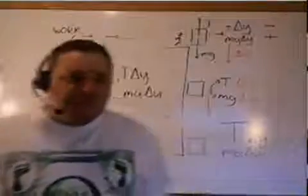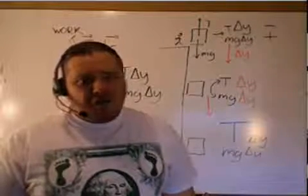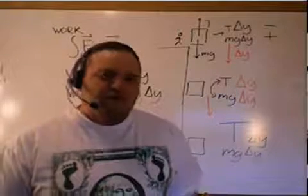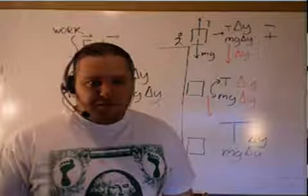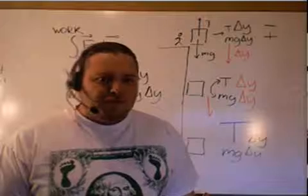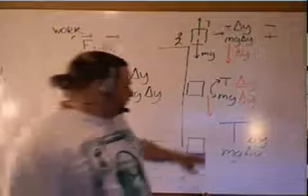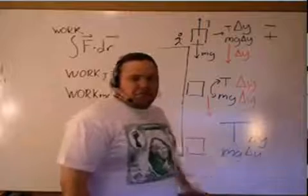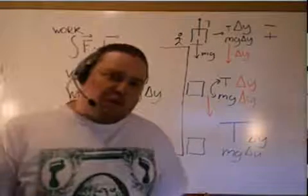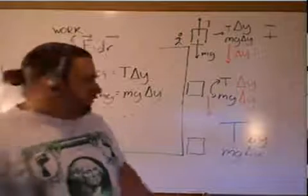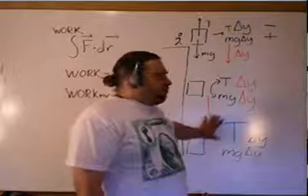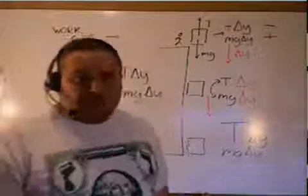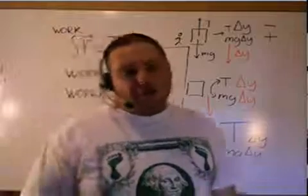So negative work means it's an attempt to slow the object down. Positive work is an attempt to speed the object up — I'm using the word 'speeding' because I'm talking about speed, not velocity. It's only when we deal with the net work that the object will actually speed up or slow down. If the net work is negative, there's more effort to slow the object down than to speed it up. That's the difference between positive and negative work.